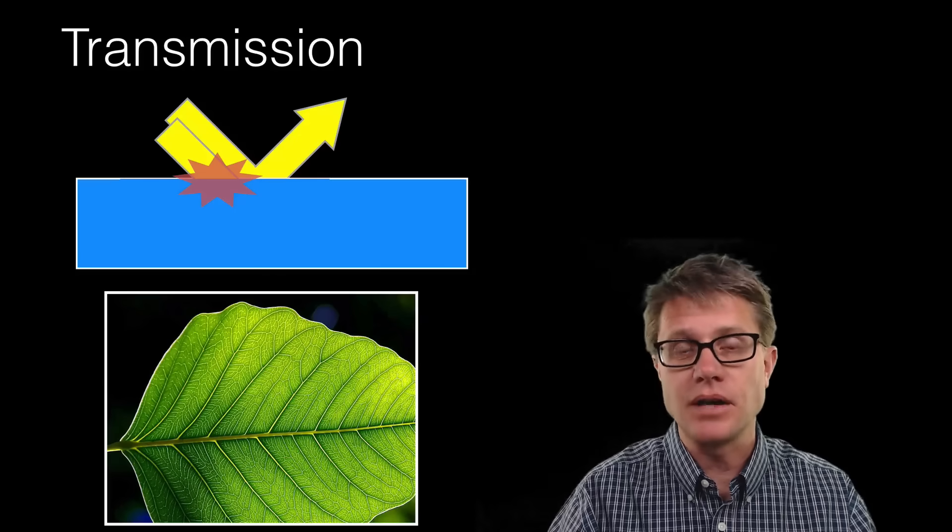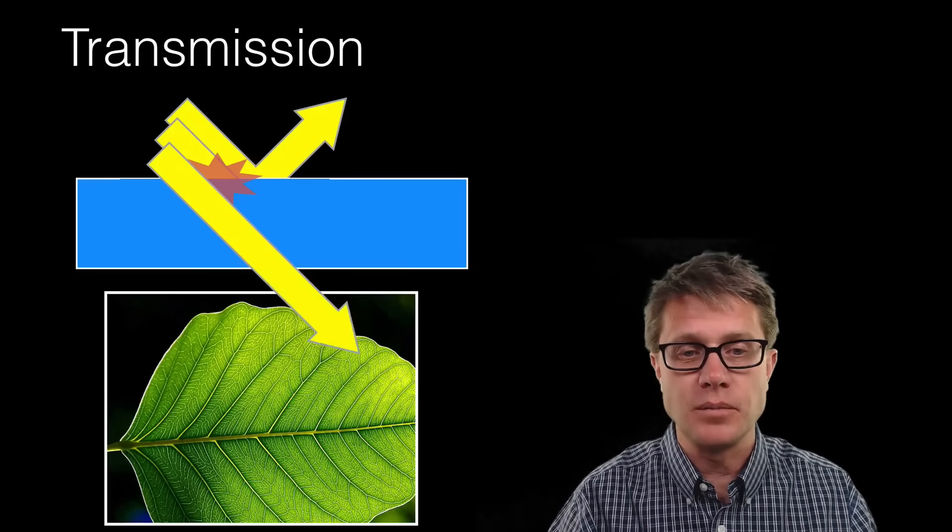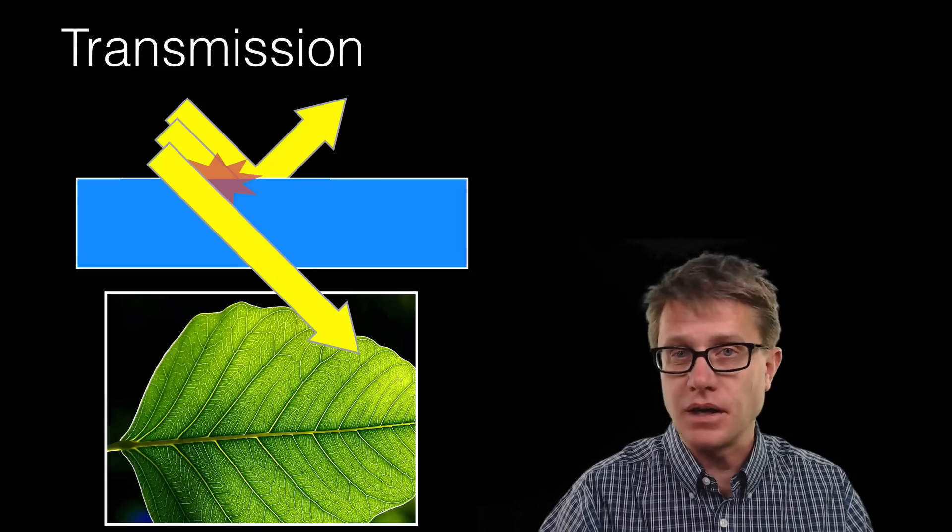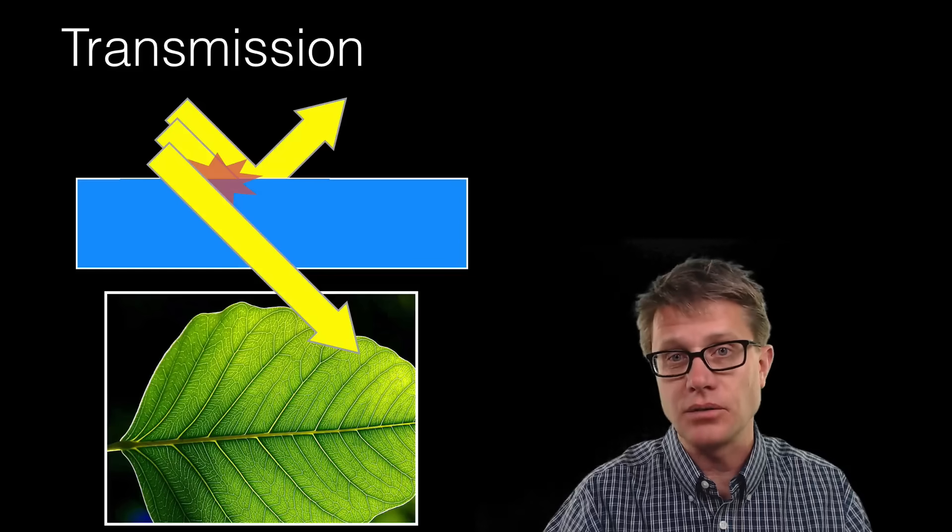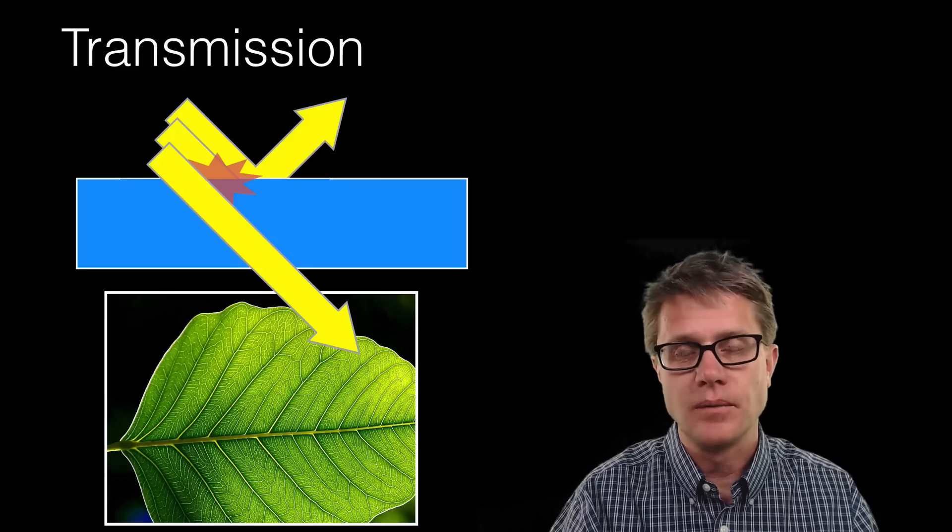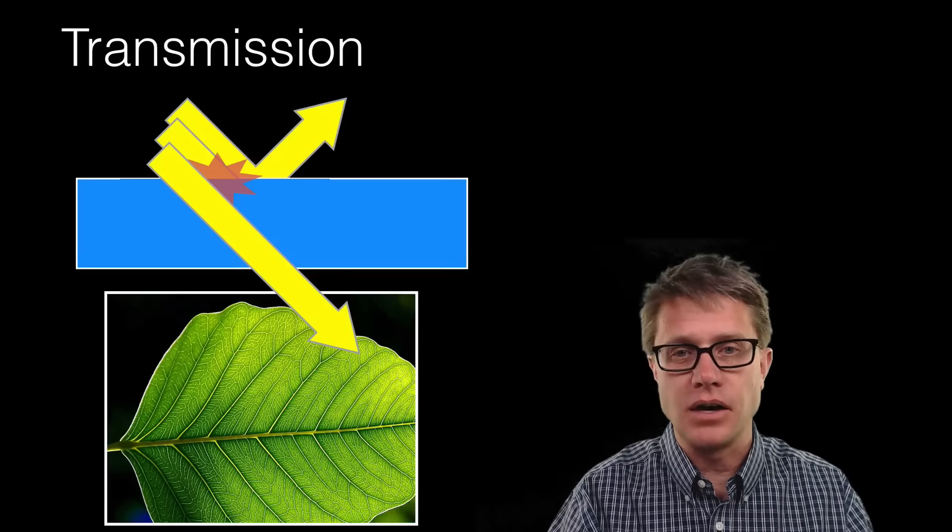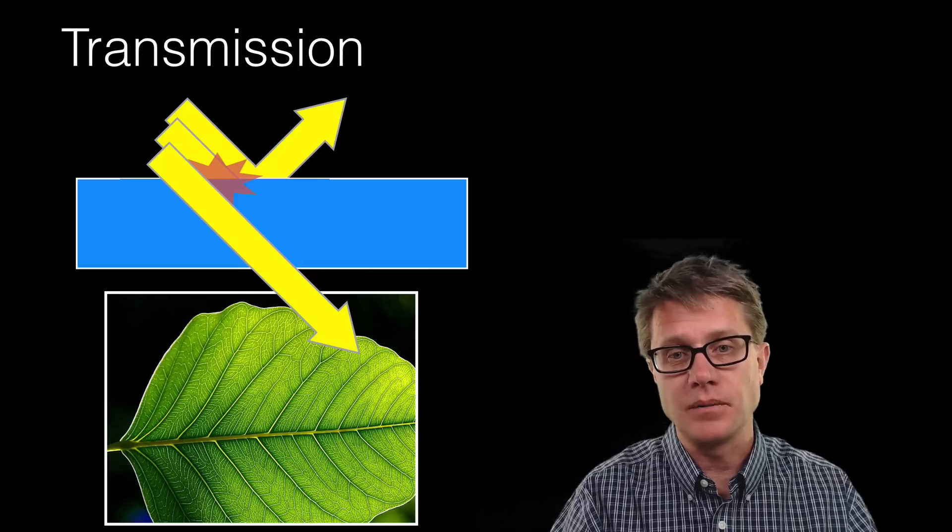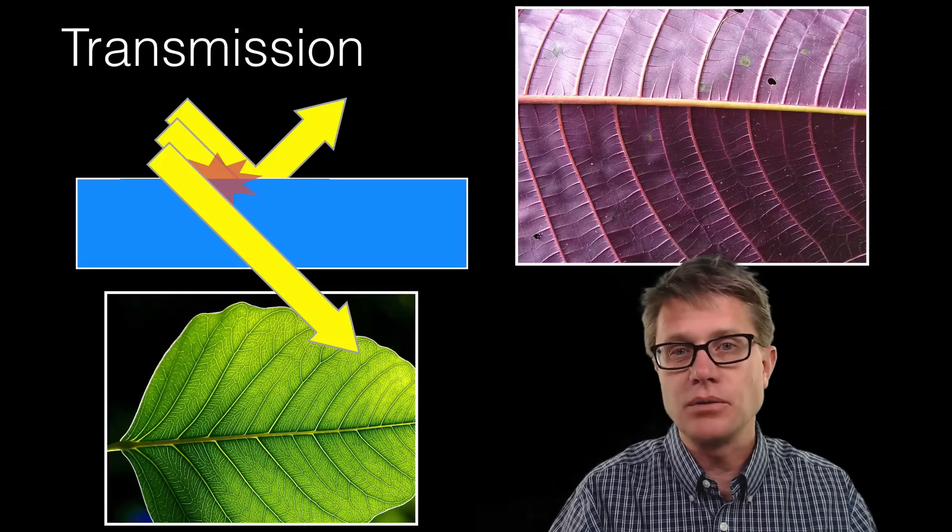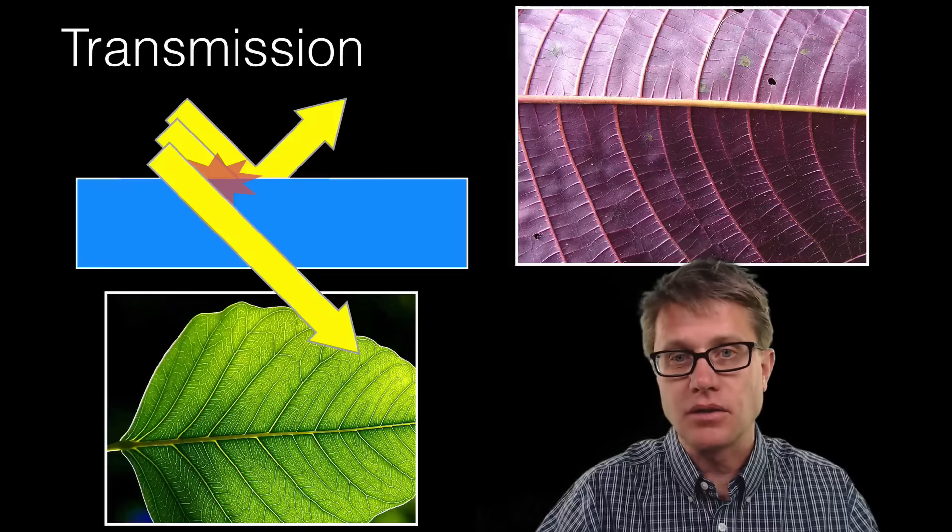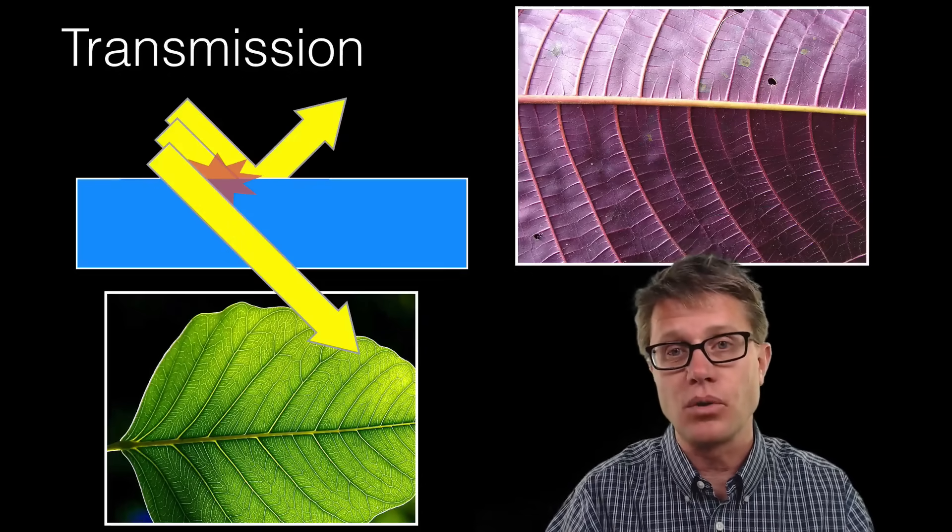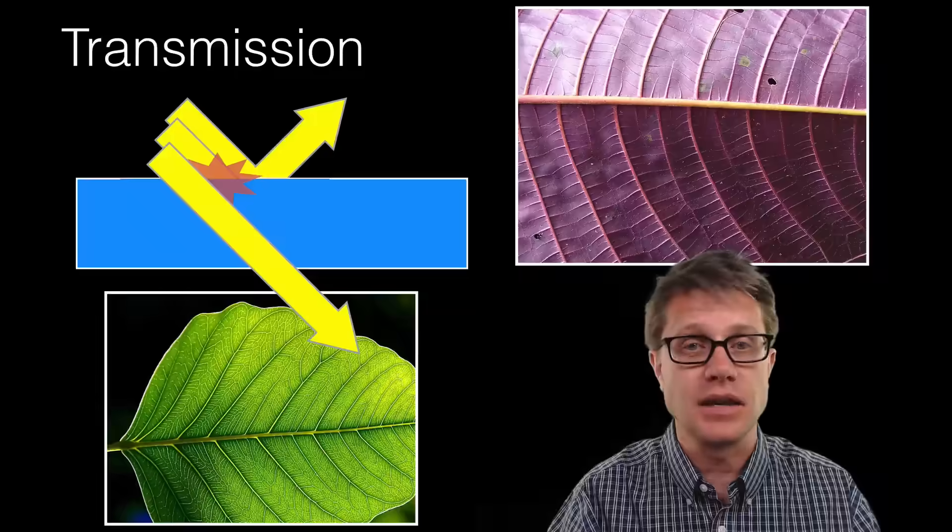Now light can also be transmitted. That means that it goes from one medium to another and it just goes right through that medium. If we were to look on the underside of a leaf, we're going to see a lot of green light coming through. But also some of that blue and red light is going to make it through as well. Some plants have evolved a barrier on the bottom. You'll see some leaves that on the bottom are reddish, bluish, or purple. What they're doing is they're having that layer so they are reflecting that back up through the leaf so they can get more of the energy out of the sunlight itself.